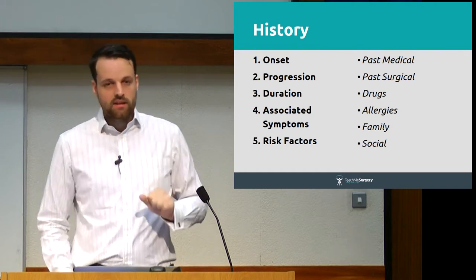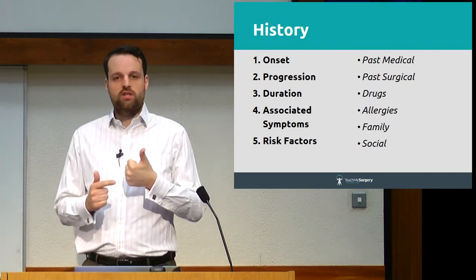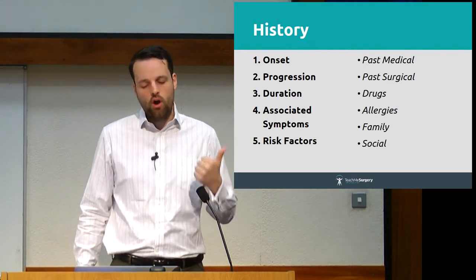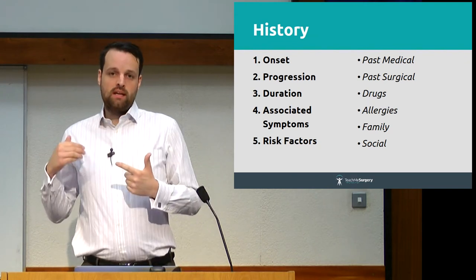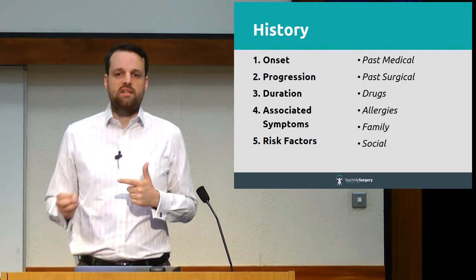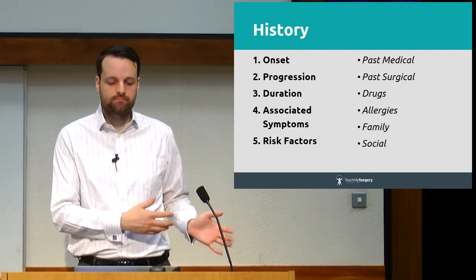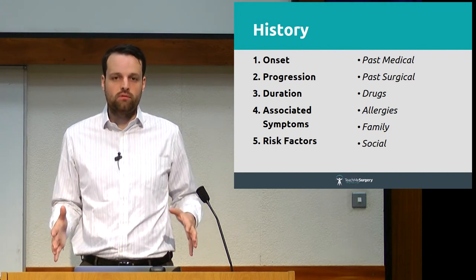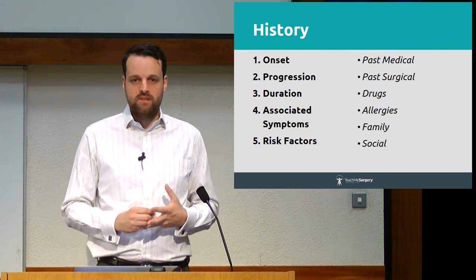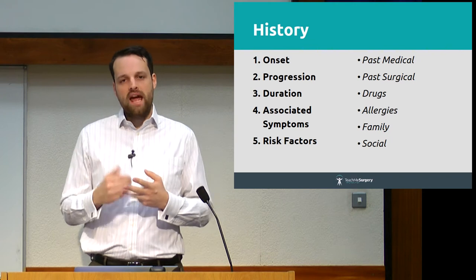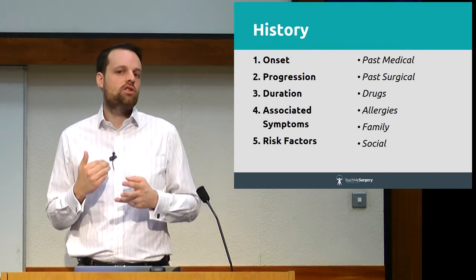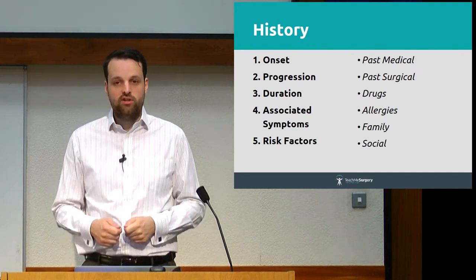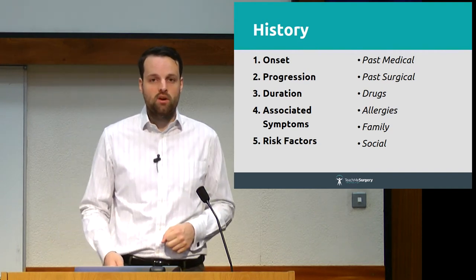We give you a system of five. Number one: onset — when did it start, where did it start, what were you doing when it started, how did it start, was it sudden or did it gradually build up? Number two: progression — what's happened since it started, is it getting worse or better, and how? Number three: duration — have you ever had this before, and how long has this episode been going on? Number four: associated symptoms — for example, if they present with abdominal pain, nail down associated symptoms such as vomiting, urinary disturbance or bowel disturbance. Number five: risk factors — find out whether the patient has any risk factors predisposing them to the diagnosis you're already thinking about.